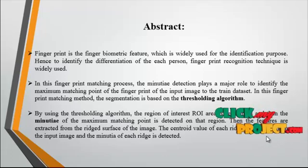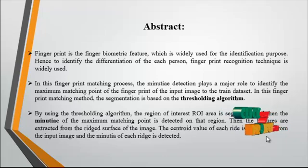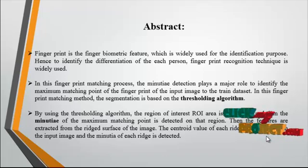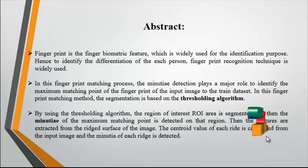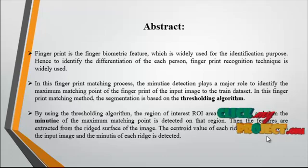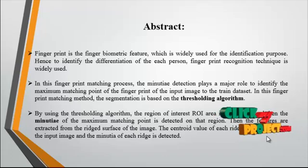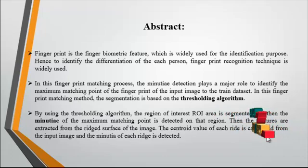As we summarized: the region of interest is selected and the segmentation is done using thresholding. Then the minutiae are defined using centroids. Then the authentication result will be based on a comparison of minutiae distance.